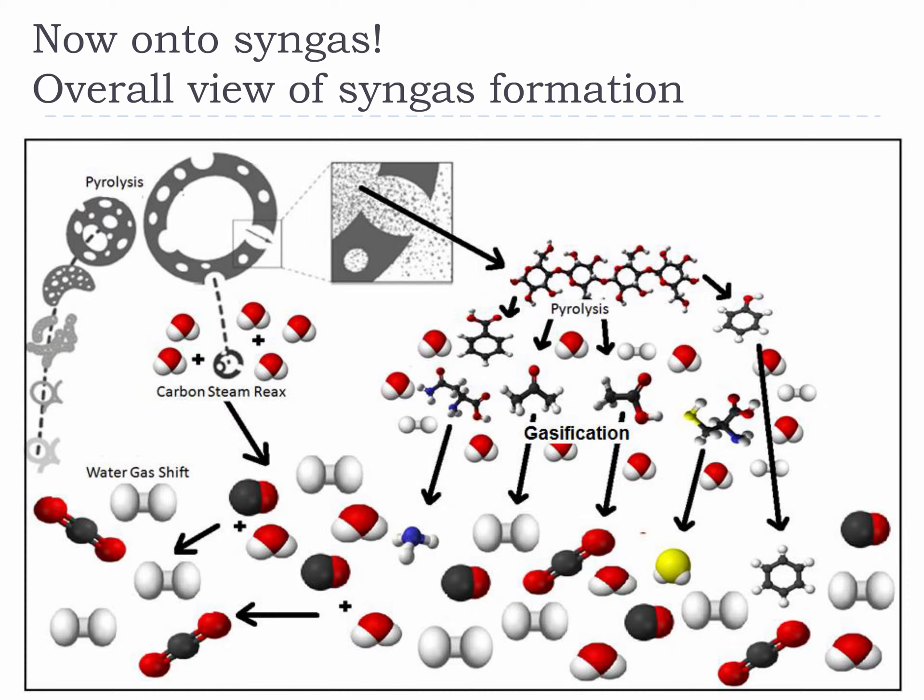This is an image of pyrolysis to gasification with some of the gas phase reactions like carbon steam and water gas shift included. These are included because syngas goes through reactions after it has been produced all by itself. Just because we have made a syngas doesn't mean it has finished reacting. It is worth considering this image for a moment so that you have a good feeling for how complex syngas can get.